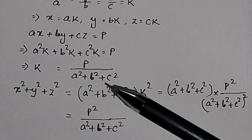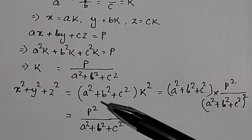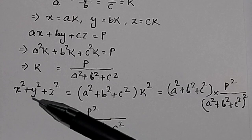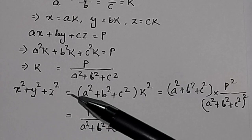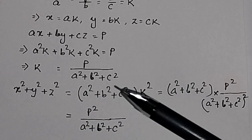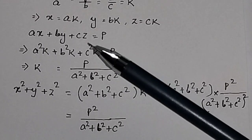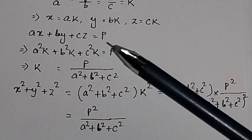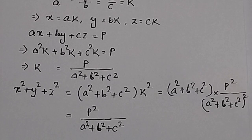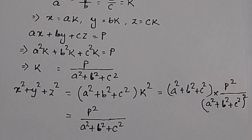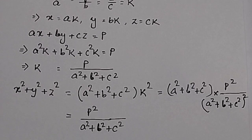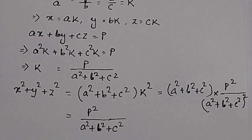This is the minimum value of the objective function x² + y² + z², where the constraint condition is ax + by + cz = p. By constraint maximization using the Lagrange multiplier, we can find the maximum or minimum value of a given objective function. This method is very useful in various computer programming applications. Thank you.